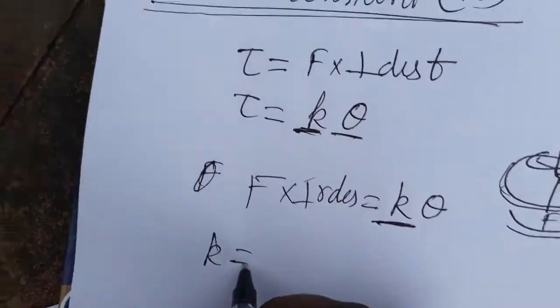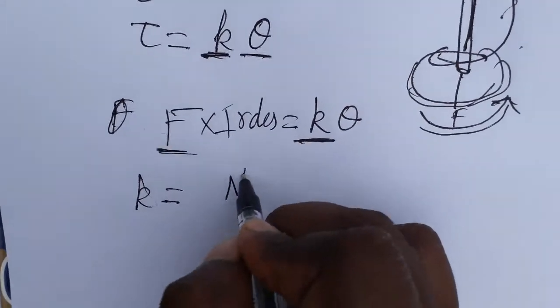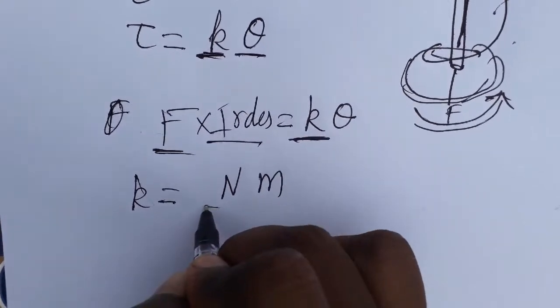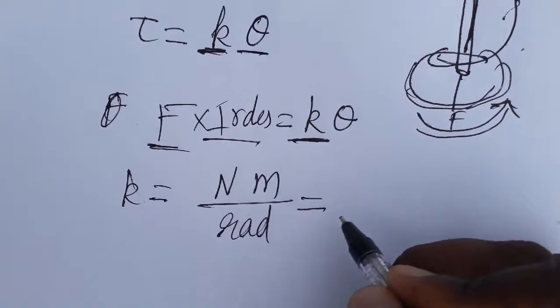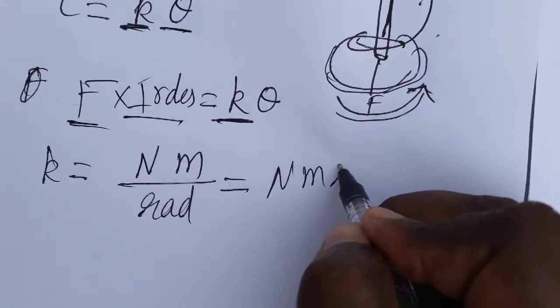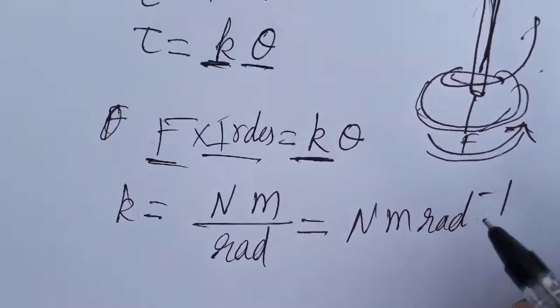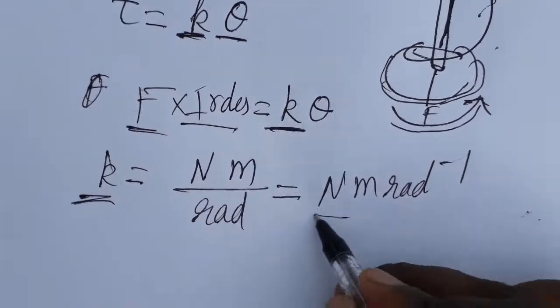K is equal to force, SI unit will be Newton. Perpendicular distance SI unit will be meter, theta SI unit will be radian. So Newton meter by radian, Newton meter radian inverse. This is the SI unit of torsion constant.